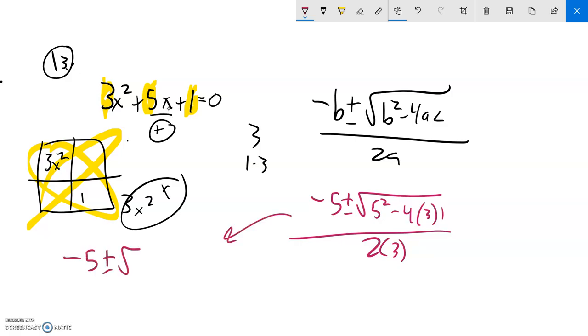Negative 5 plus or minus the square root of... 5² is 25, 4 times 3 is 12 times 1 is 12, so minus 12. Over 2 times 3 is 6.